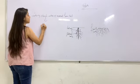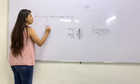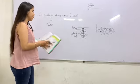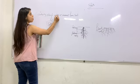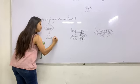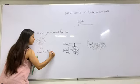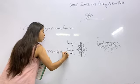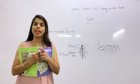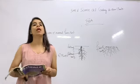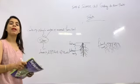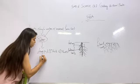Roots absorb water and minerals from the soil, and the stem conducts them to the leaves and other parts of the plant. Leaves already have sunlight and chlorophyll, so leaves prepare food by the process of photosynthesis.